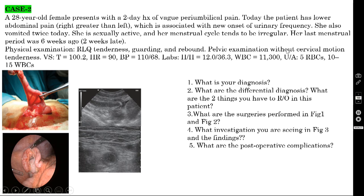Pelvic examination shows no cervical motion tenderness. Vitals: temperature 100.2, heart rate 90, BP 110/68. Labs: hemoglobin 12, hematocrit 36.3, WBC 11,300. Urine analysis shows 5 RBCs and 15 WBCs. There are three pictures accompanying this case.